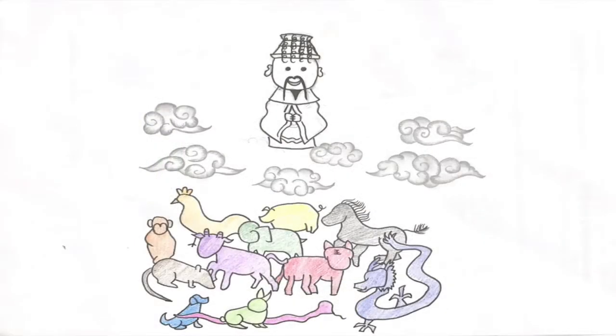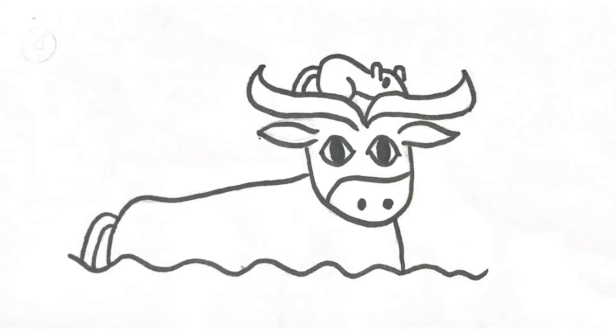It was told that the Chinese god wanted to hold a great race to choose his guards. The faster the animal entered the heavenly gates, the higher their rankings would be. There was a wide river to cross in order to arrive at the heavenly gates.